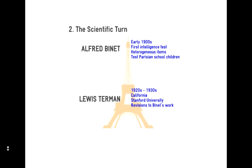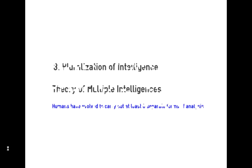Binet's work was built on by a man called Lewis Terman, working in California at Stanford University. In the 1920s and 1930s he looked at Binet's tests and revised them, trying to make them more accurate. These are the two best-known figures in the scientific analysis and testing of intelligence.